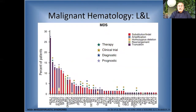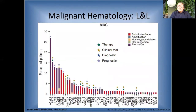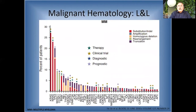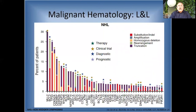For MDS, we can suspect it and we will talk about how to suspect MDS from the routine hematology analyzer. In the future you will only have to do a next generation sequencing kit to determine the type of therapy and prognosis. The same applies for multiple myeloma and non-Hodgkin lymphoma and lymphoproliferative disorders.